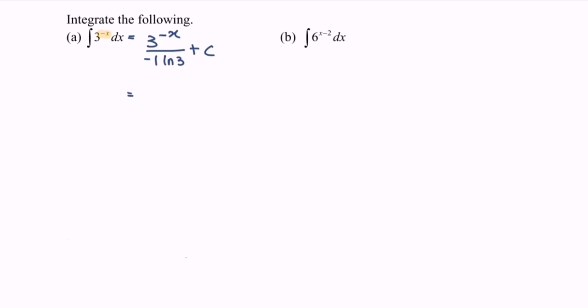Do remember to add on ln 3 plus c. Simplify the situation, and we will have 3 to the power of negative x, multiply with negative over ln 3 plus c.